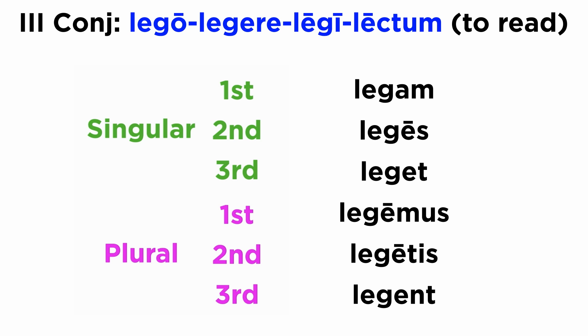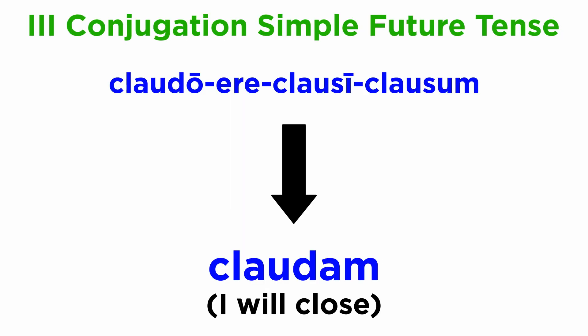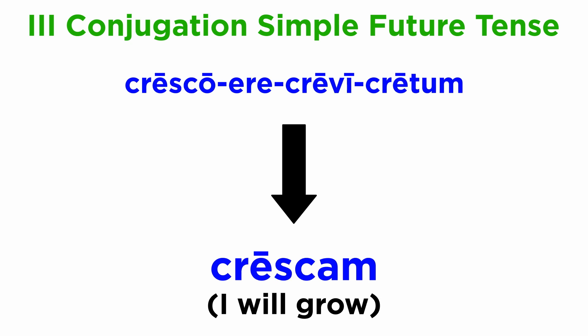Let's recall some common verbs of the third conjugation that will conjugate just like lego, legere. Claudo, claudere, clausi, clausum — claudam. Cresco, crescere, crevi, cretum — crescam.